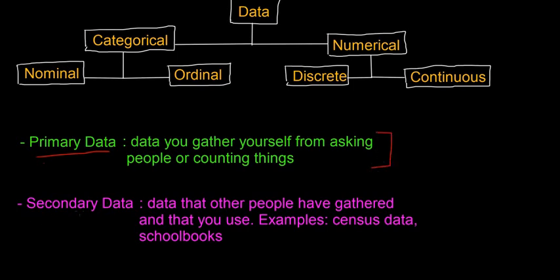The second type of data is secondary data. So data that other people have gathered and that you use. So examples are census data and school books.